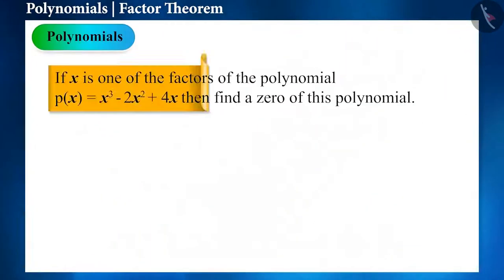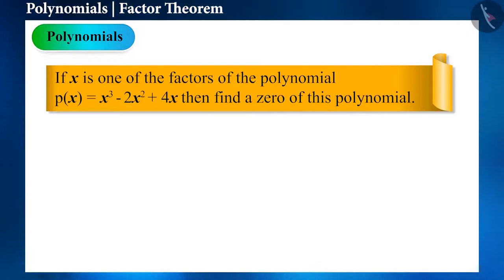Let's start. If x is one of the factors of the cubic polynomial p(x) = x³ - 2x² + 4x, then what can be one of the zeros of this polynomial?